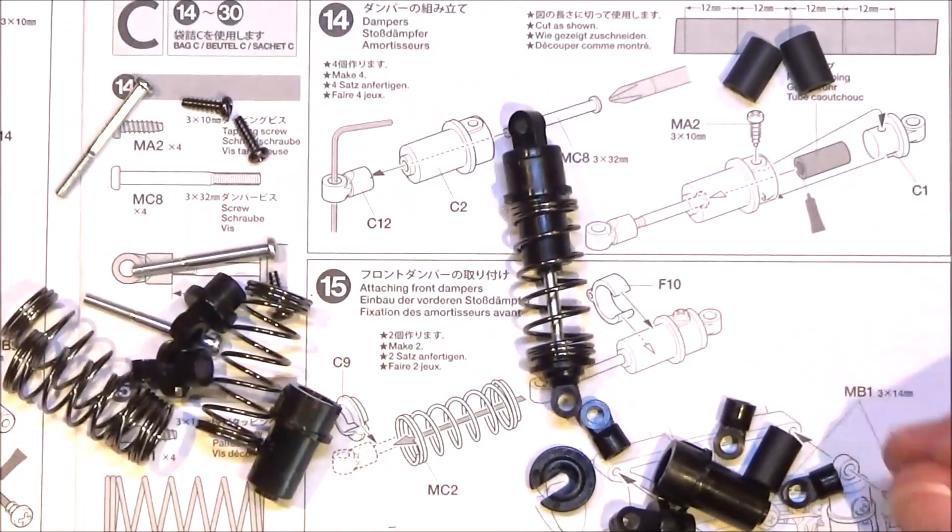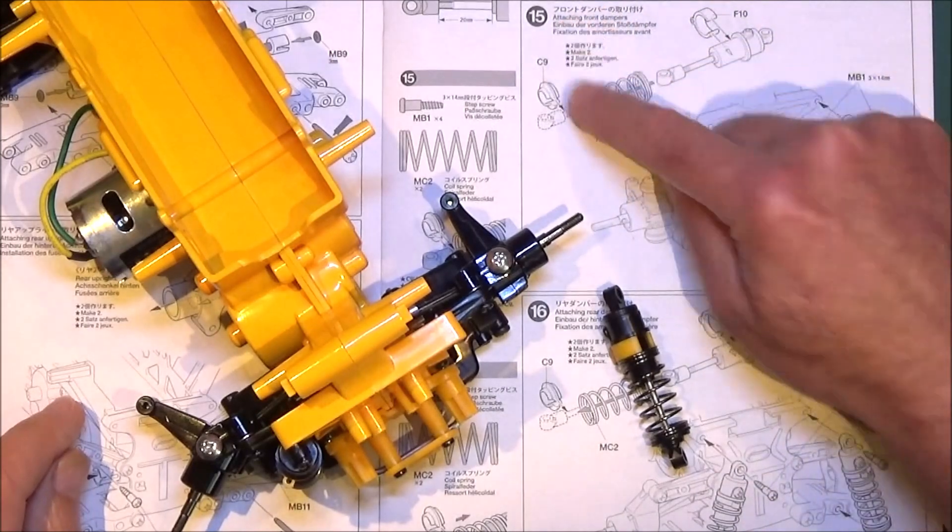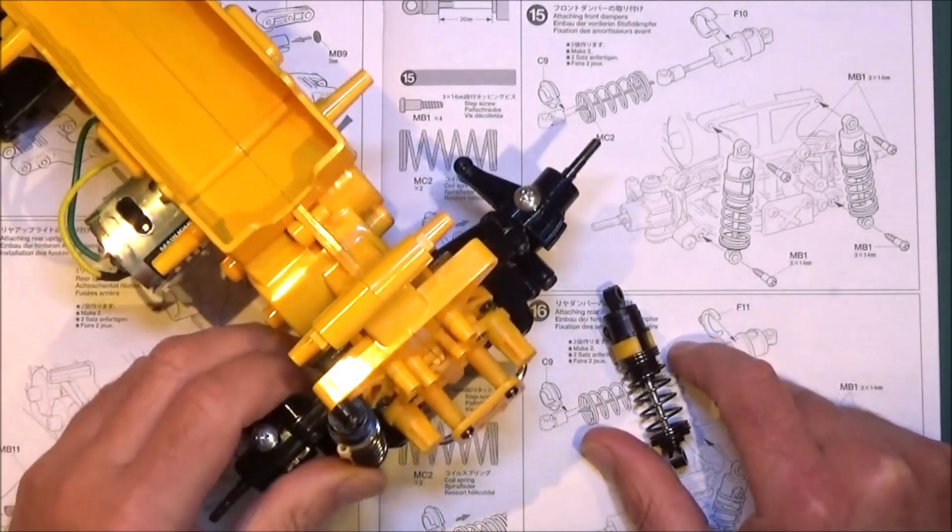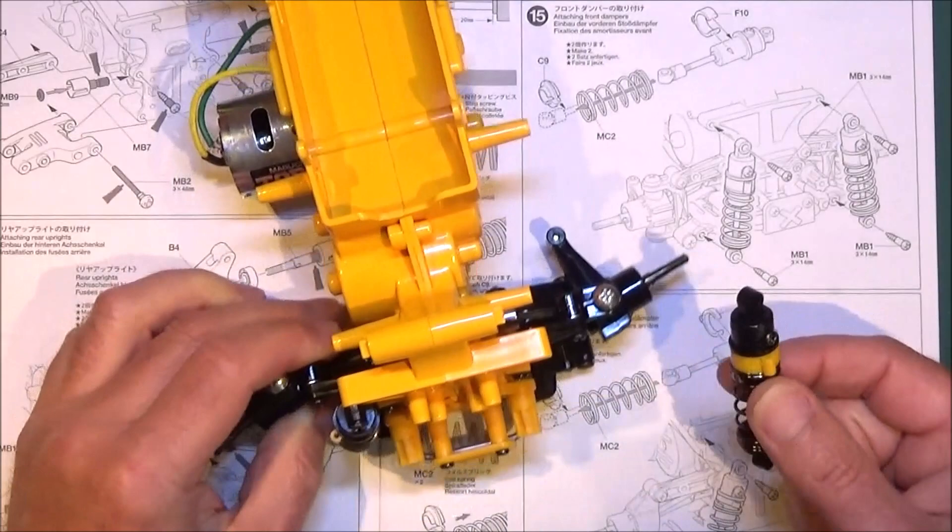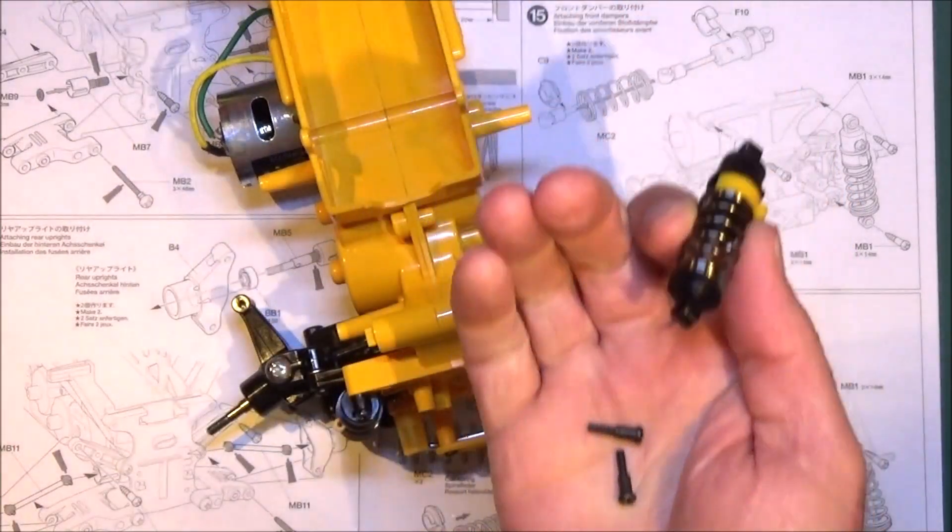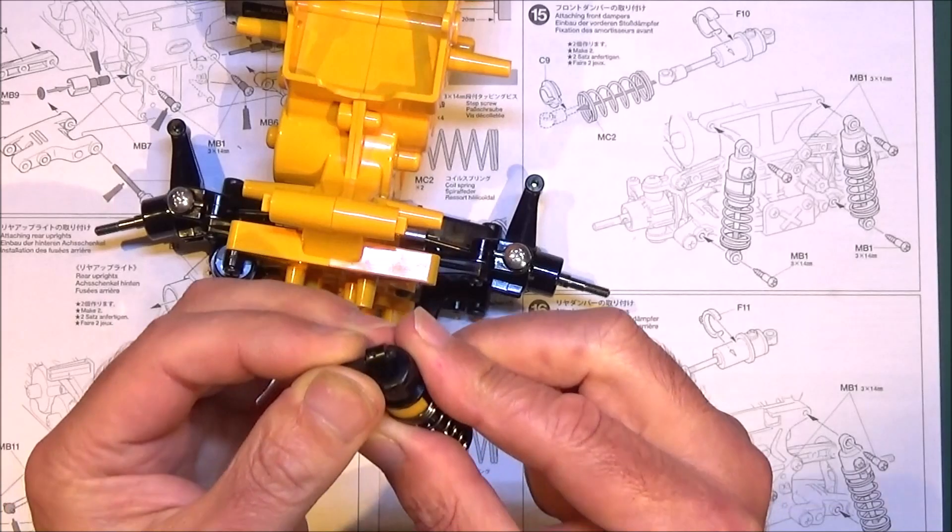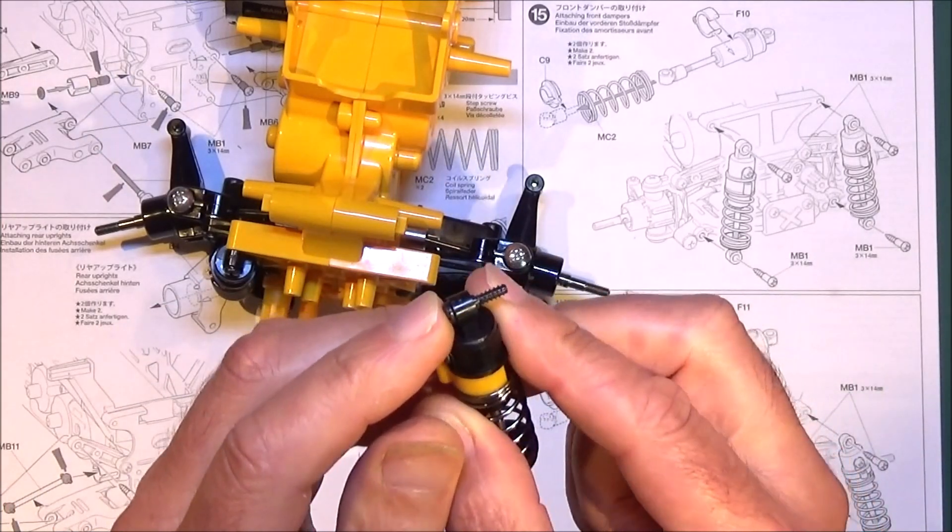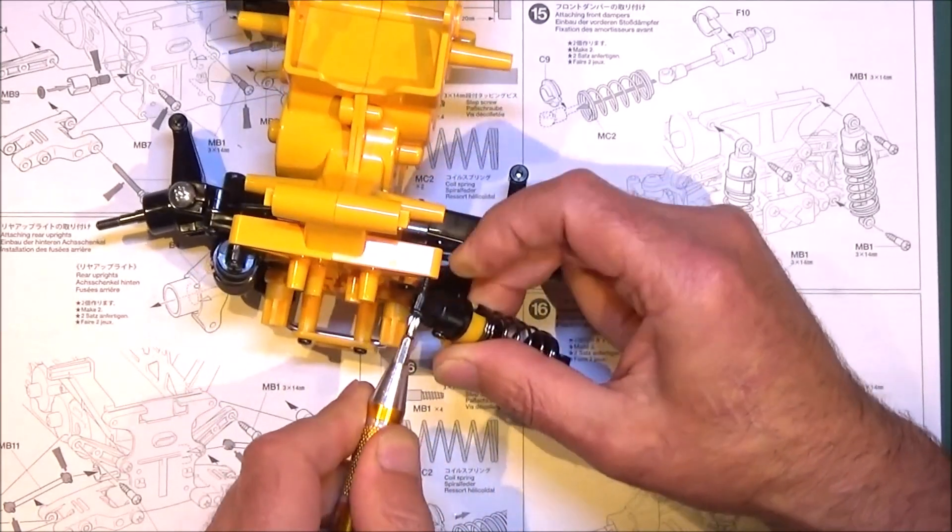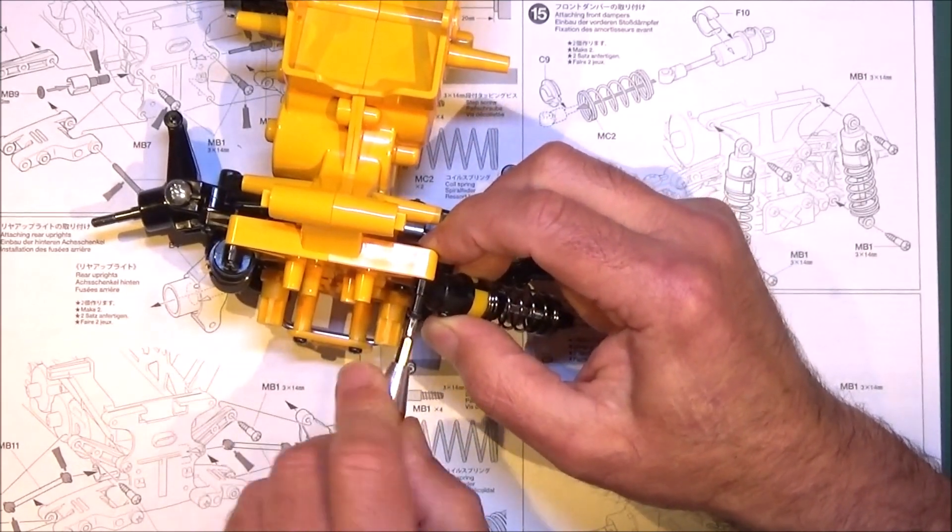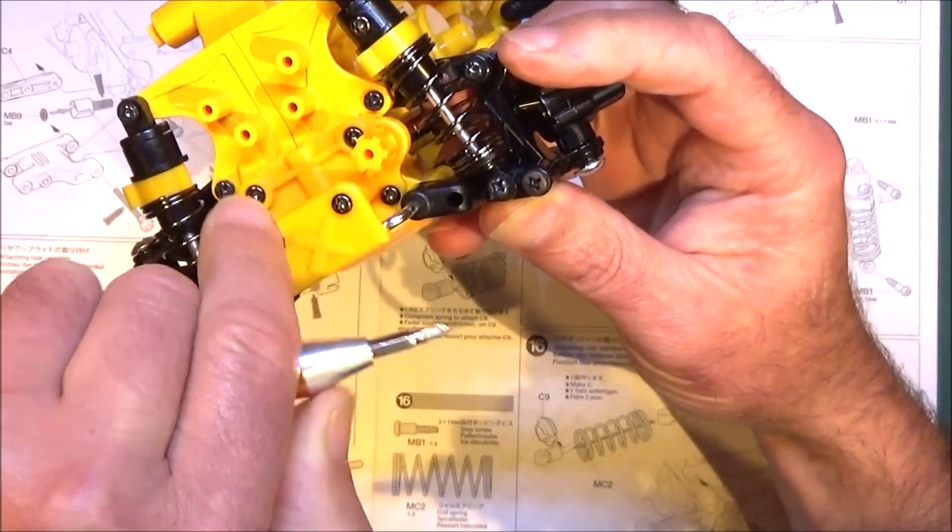With all the shocks built, it's on steps 15 and 16 which is basically fitting them onto the chassis. As you can see, 15's the front dampers. There's one fitted already. All we need quite simply is your shock and two of the step screws. I think it's easy to fit the top one first. Pop your step screw through, easier said than done, and put that in that top mount there.